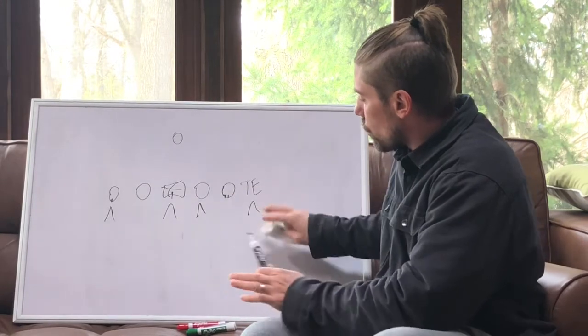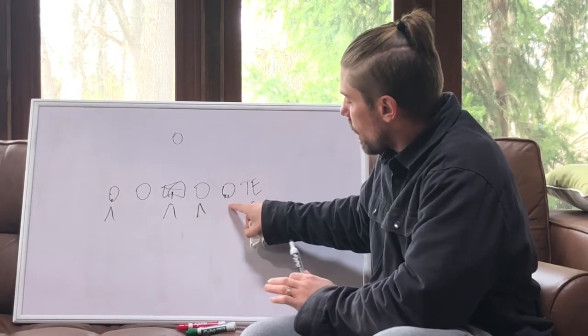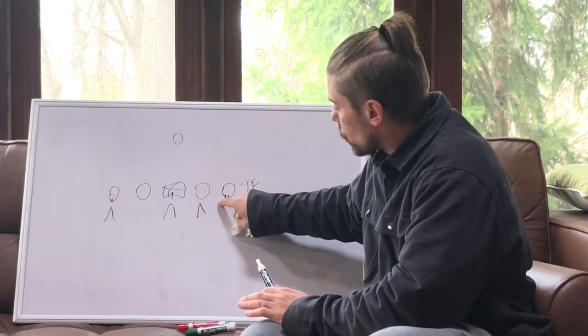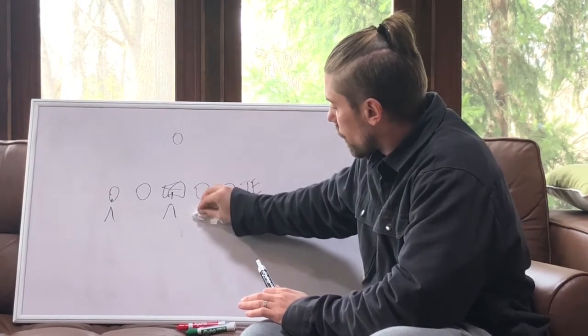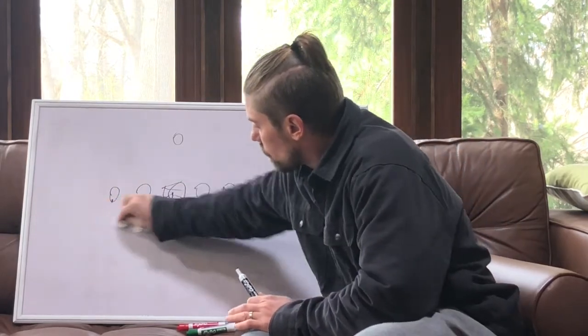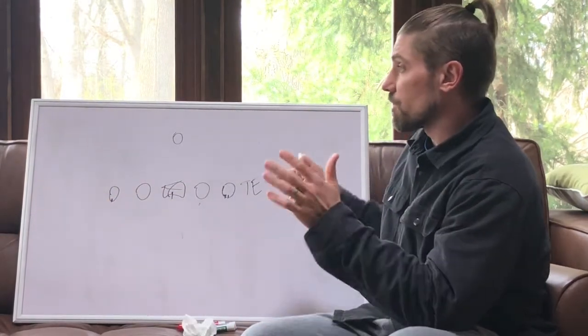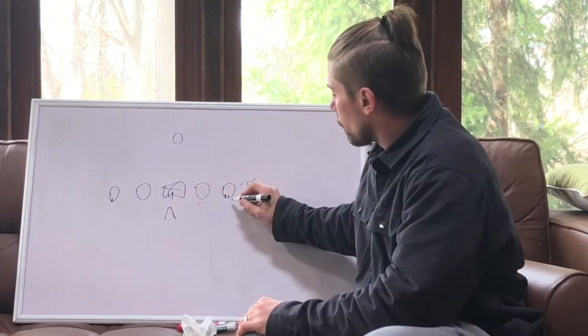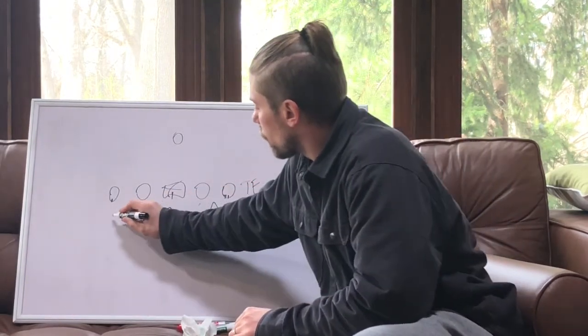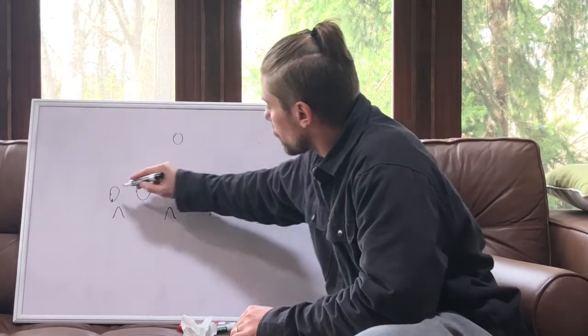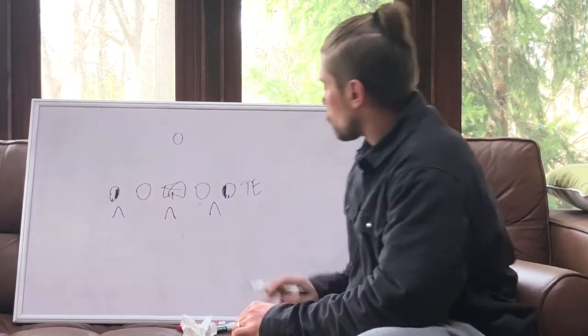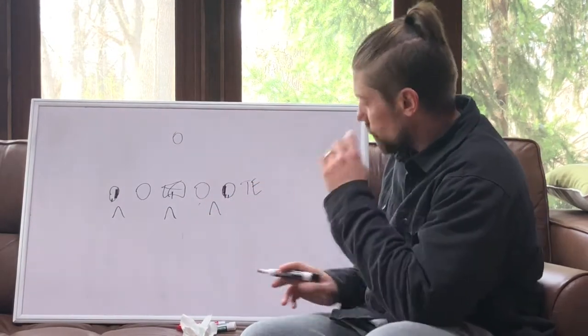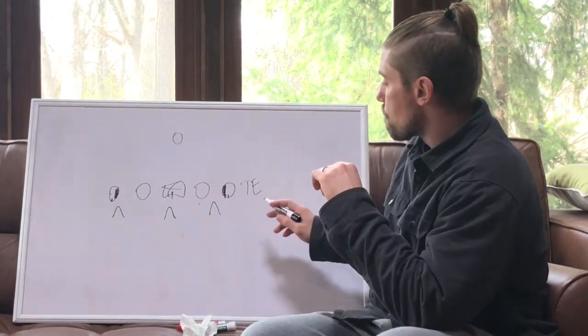So either one of those would be considered an eagle front, where we're taking that four technique and reducing him down into the box here to either a shaded three or a straight two technique here. So a double eagle front kind of has its own name. They call that a bear front. So a bear front, again, another odd front. Let's say, let's just put them both in threes or inside shades here.